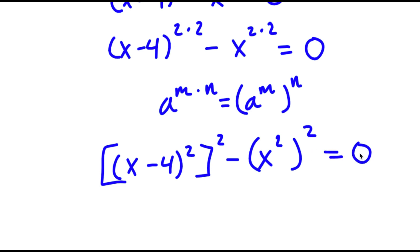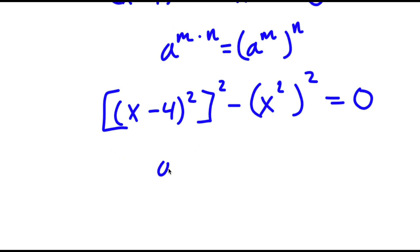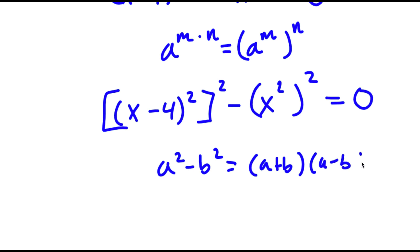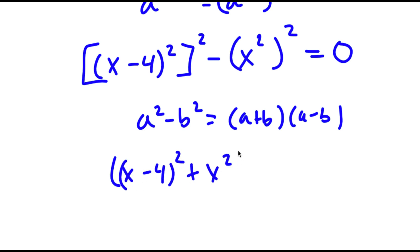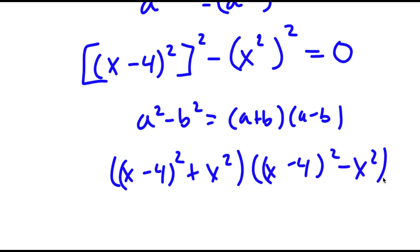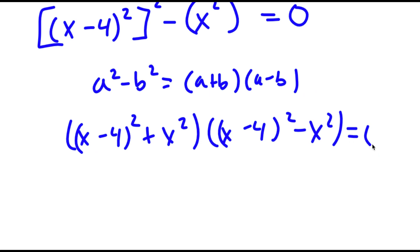This is equal to 0. Now if I have something in the form a squared minus b squared, this is equal to a plus b times a minus b. So x minus 4 squared to the power of 2 minus x squared to the power of 2 equals x minus 4 squared plus x squared times x minus 4 squared minus x squared, and this is equal to 0.